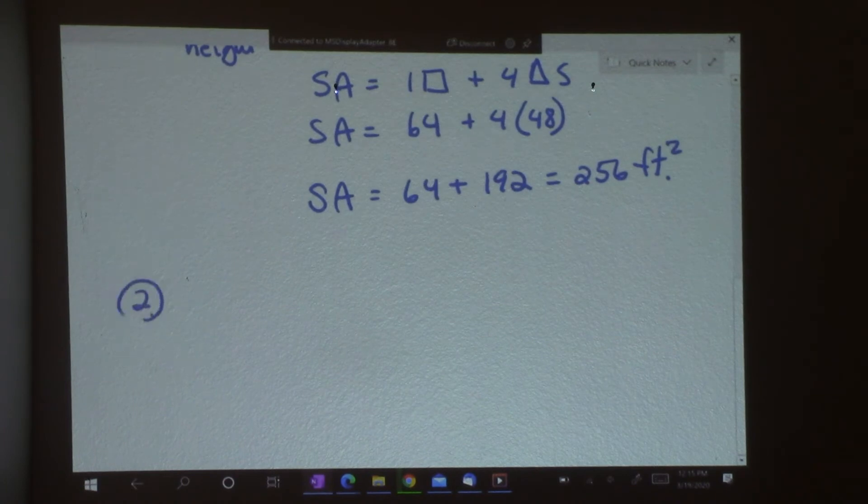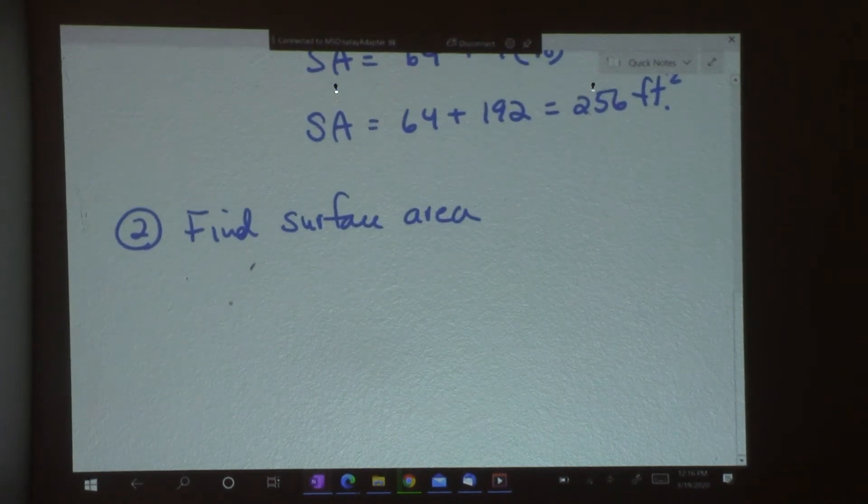And here's number two. We're going to do the surface area of a cone. And here's my picture. And I have dots for behind it. And my radius is 4 and this length here is 9. That's the slanted length.